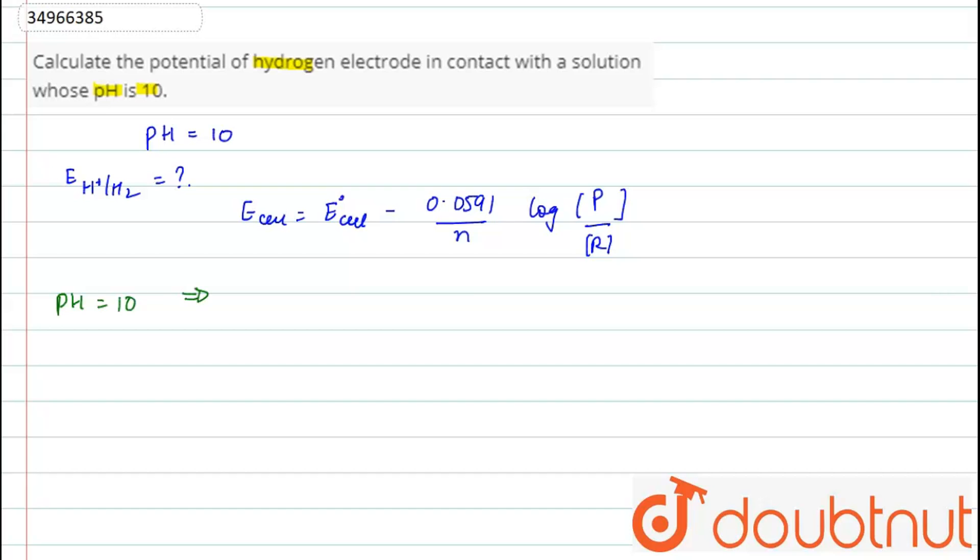this implies that H+ concentration is equal to 10 raised to power minus 10 mole per liter. As we know, negative log of H+ is equal to pH of the solution.